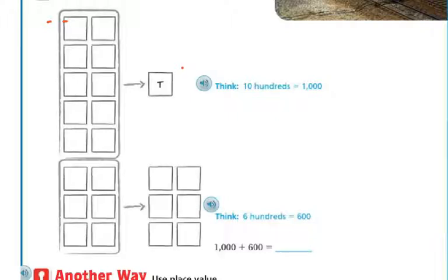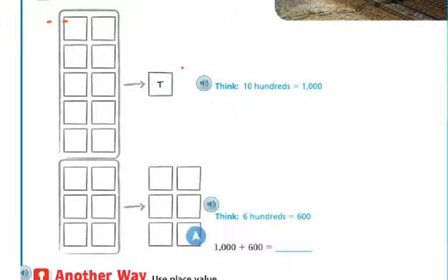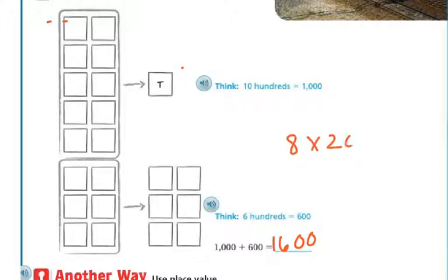Well, 10 of those right here — you're going to think ten hundreds is a thousand. So I'm going to put a T for a thousand, and then I'm going to have six left over. And six one-hundreds is six hundreds. So one thousand plus six hundred is sixteen hundred. So the answer for 8 times 200 is sixteen hundred.